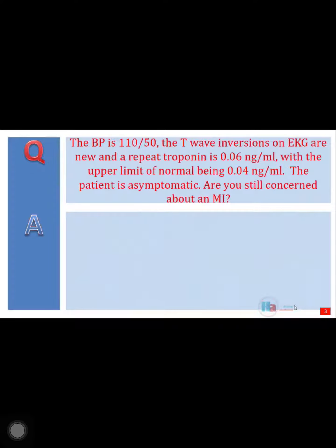The blood pressure is 110 over 50. The T-wave inversions on EKG are new, and a repeat troponin is 0.06 nanograms per milliliter, with the upper limit of normal being 0.04 nanograms per milliliter. The patient is asymptomatic. Are you still concerned about an MI?